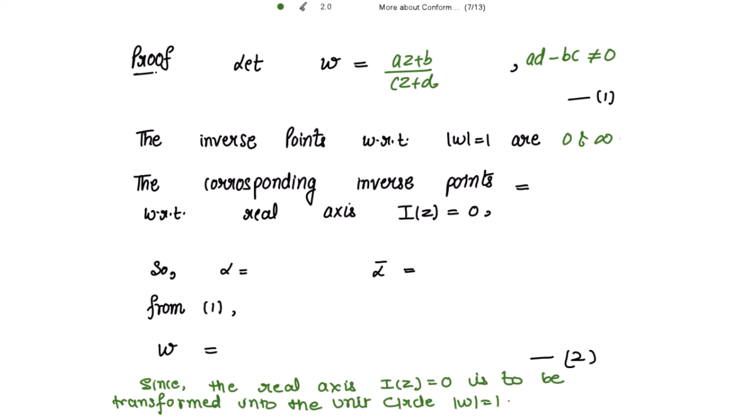In the theorem we need |w| ≤ 1 for Im(z) ≥ 0, but here I am first taking the equality case. For |w| = 1, the inverse points are 0 and infinity. When w = 0, the corresponding z = -b/a; when w = infinity, the corresponding z = -d/c.